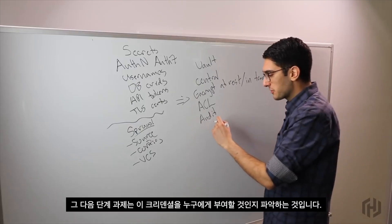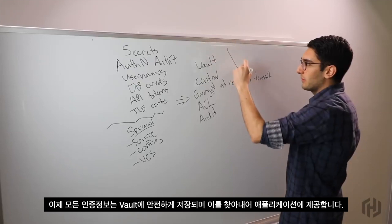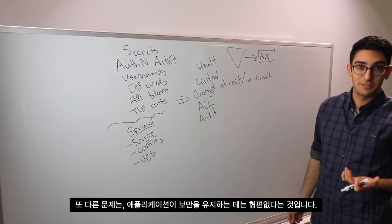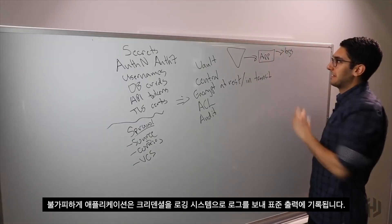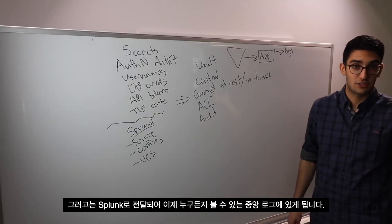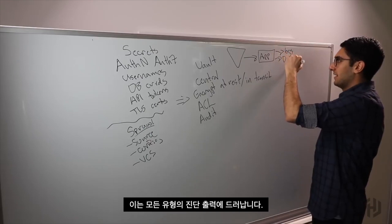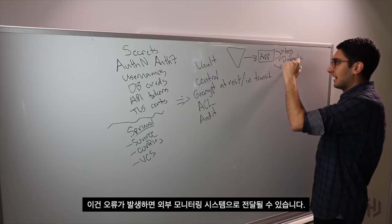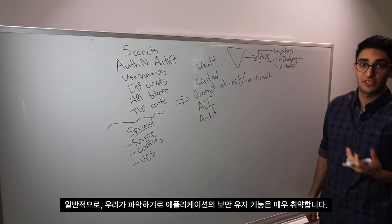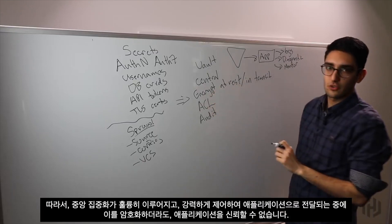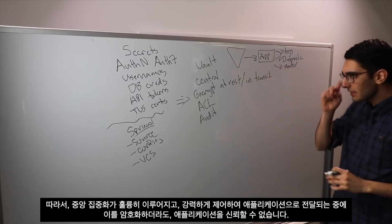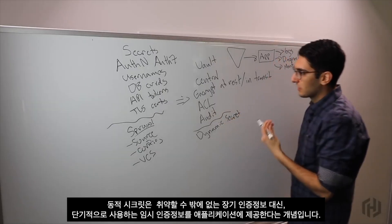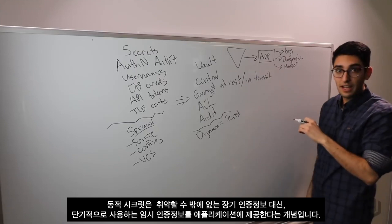This is sort of the level-one challenge with Vault: moving from a world of sprawl, where things are everywhere, to a world of centrality, where we have strong guarantees that it's encrypted, strong guarantees around who has access, and strong visibility. The next level challenge is realizing who we're giving these credentials to. We've stored all these credentials safely in Vault and now we're going to thread these out and provide them to an application. The challenge is applications do a terrible job keeping secrets. Inevitably, the application will log its credentials out to a logging system, it might show up in diagnostic output or an exception traceback, or it might be shipped to external monitoring systems.